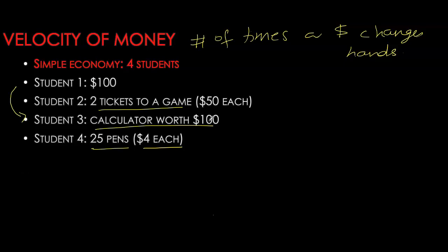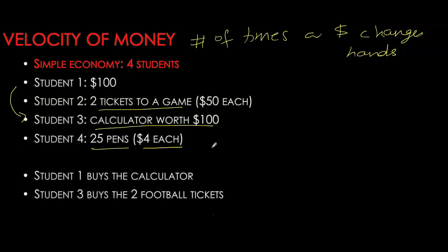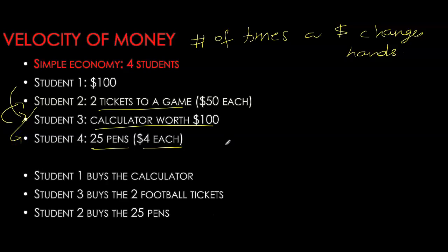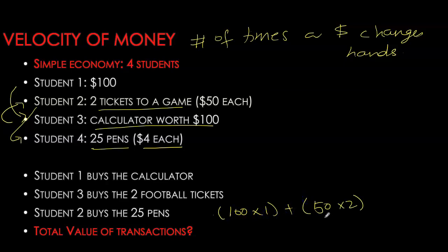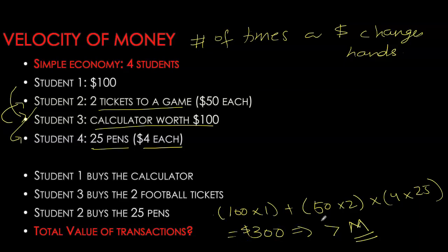Let's introduce some transactions. First, student one buys the calculator worth $100. Second, because student three now has $100, he can buy the two football tickets — spending all $100 going from student three to student two. Third transaction: student two buys the 25 pens. Given the total stock of money is $100, the total value of transactions is actually much more. The first $100 were spent on the calculator, the second on the tickets, and the third on the pens — giving an overall transaction value far higher than our money stock. In this economy, money changed hands three times, giving you a velocity of three.